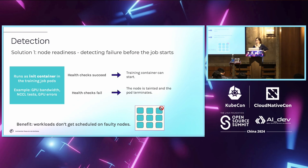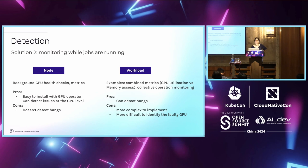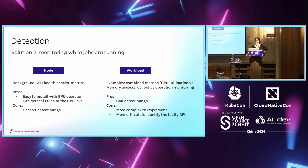It's important to taint the node or use any strategy to disable further workloads from being scheduled on that node. The benefit of this approach is that workloads don't get scheduled on nodes with such errors. A complementary solution is monitoring while jobs are running — running GPU health checks in the background at the node level and collecting metrics. For example, the DCGM exporter metrics are easy to install with the GPU operator and can detect issues at the device and GPU level.